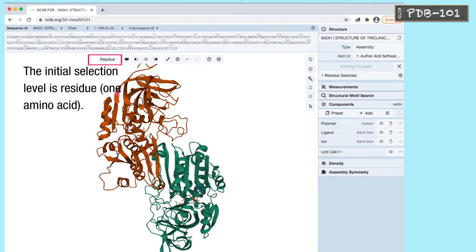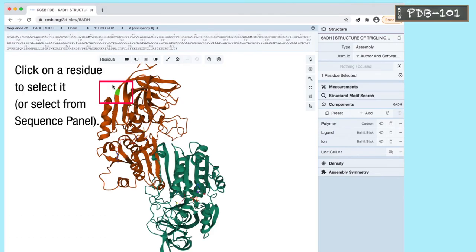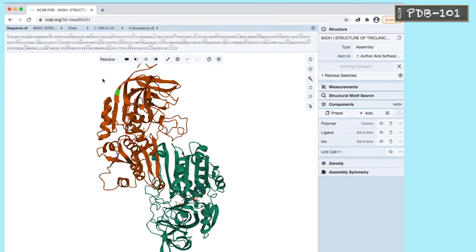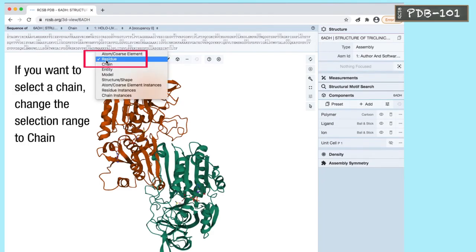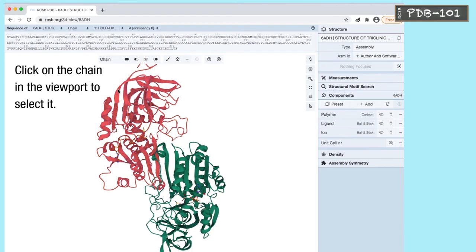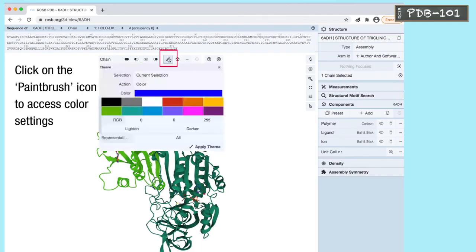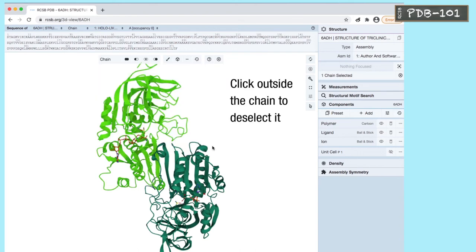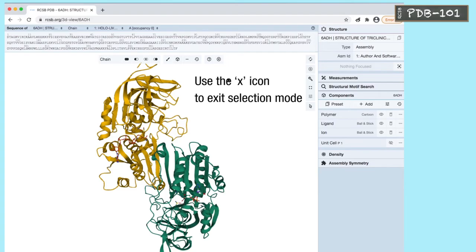The initial selection level is one residue. Click on a residue to select it or select it from the sequence panel. If an element is selected, it is highlighted in green when you remove the cursor from it. If you want to select the chain, change the selection range to chain. Click on the chain in the viewport to select it. Click on the paint brush icon to access the color settings. Choose the color and click apply theme. Click outside the chain to deselect it. Use the X icon to exit selection mode.